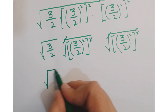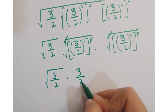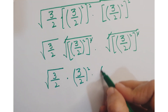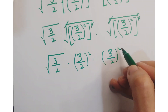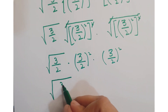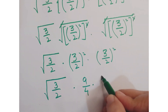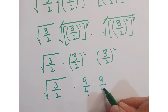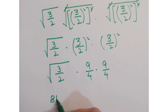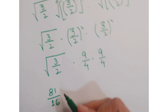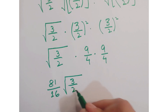Now this 2 and the root get cancelled, and here this 2 and the root get cancelled. So we have root of 3 upon 2, into 3 upon 2 whole squared, into 3 upon 2 whole squared. This gives 3 upon 2 into 9 upon 4 into 9 upon 4, which equals 81 upon 16 into 81 upon 16, into under root 3 upon 2.